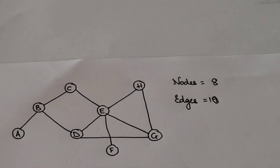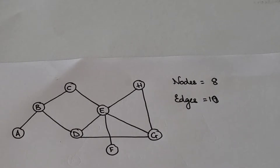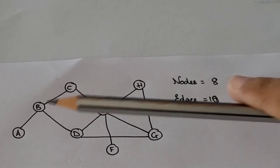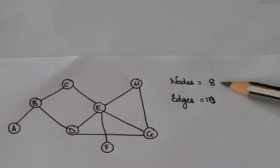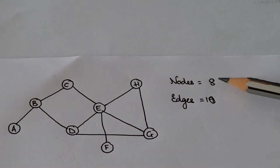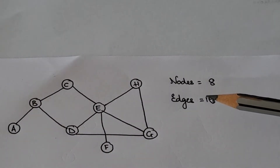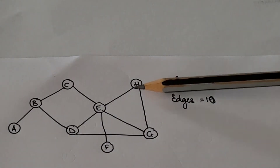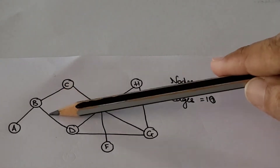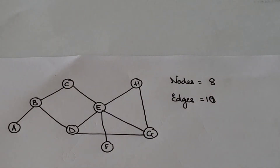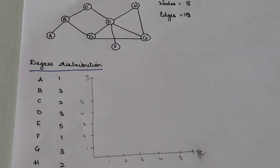A graph has been given. By looking at the graph you can see that this is an undirected graph — there is no direction pointing towards any of the nodes. Total number of nodes is 8. Now calculate the edges — edges are the lines connecting two nodes: 1, 2, 3, 4, 5, 6, 7, 8, 9, 10. So total number of edges is 10. Now we will be calculating degree distribution for the given graph.